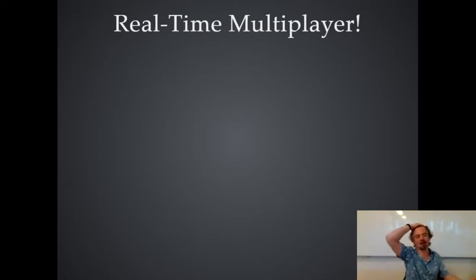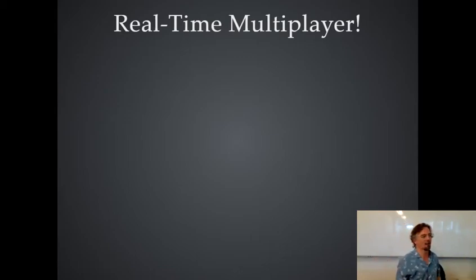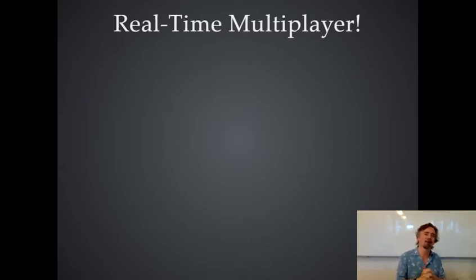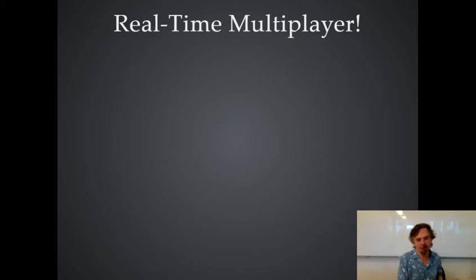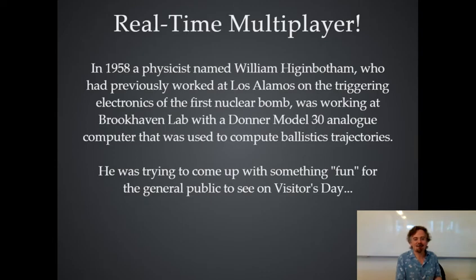Computer games, in a certain sense, go back quite a long time — it wasn't long after we had computers before people started putting games on them. We think about modern computer games as real-time, running at 60 frames a second, with complications like multiplayer. How long do you think it was before real-time multiplayer games were invented? If we had basic ones in 1950, you might guess the 1970s. But actually, in 1958, the first real-time multiplayer computer game was invented.